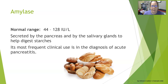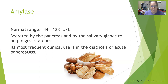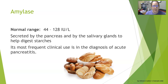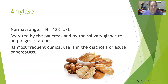The normal range for amylase is 44 to 128 international units per liter. Like all other enzymes, we are mostly concerned with high levels, not low levels. Amylase is secreted by the pancreas and by the salivary glands, and it helps digest starches such as breads, pastas, cookies, cakes, and crackers. It is most frequently used in the diagnosis of acute pancreatitis, where elevations are often 10 to 20 times the upper limit of normal, if not more.